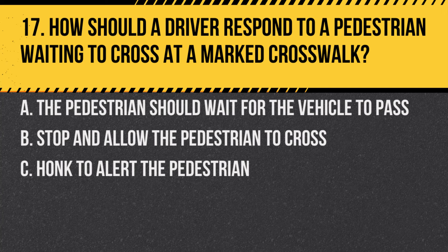Question 17. How should a driver respond to a pedestrian waiting to cross at a marked crosswalk? A. The pedestrian should wait for the vehicle to pass. B. Stop and allow the pedestrian to cross. C. Honk to alert the pedestrian. Answer: B. Stop and allow the pedestrian to cross. Pedestrians have the right of way at marked crosswalks.